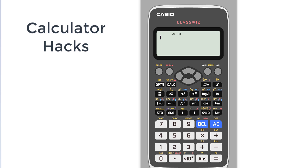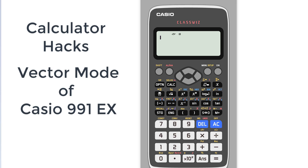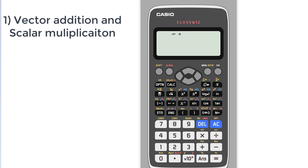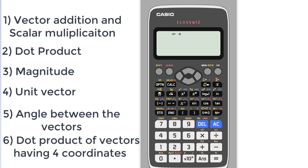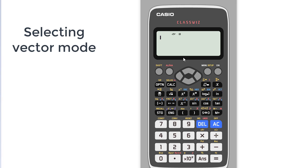Hello everyone, welcome to calculator hacks lecture series. Today we're going to explore the vector mode of the calculator. In this lecture we'll discuss basic operations of vector addition and scalar multiplication, along with finding the dot product, magnitude of the vector, unit vector, angle between vectors, and most importantly, the dot product of vectors having four coordinates. So let's begin.